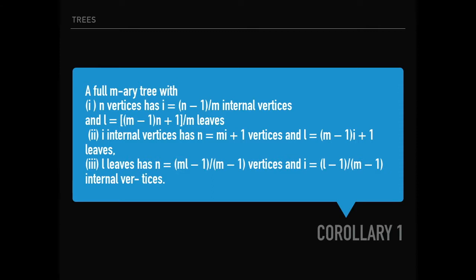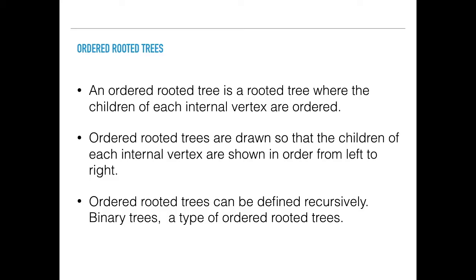Recap of the m-ary tree equations: the number of vertices n equals m multiplied by i plus one. The number of leaves can also be calculated by m times l minus 1 divided by n minus 1. The internal vertices i can be calculated by l minus 1 divided by m minus 1. It is very important to remember these equations.